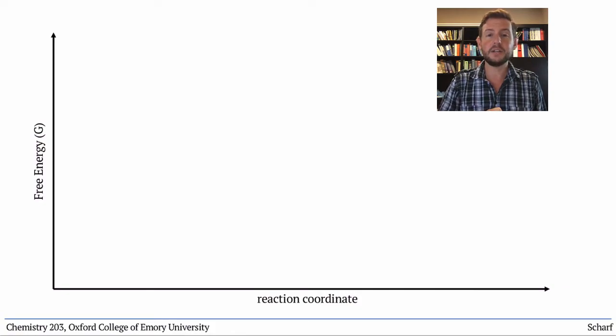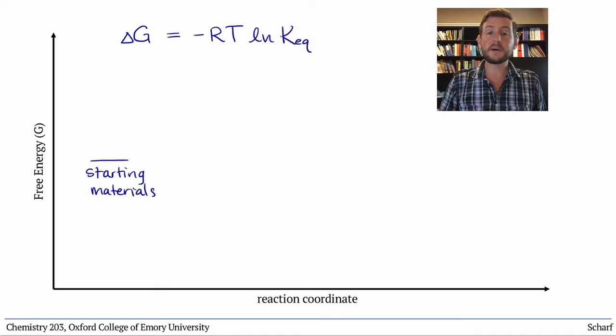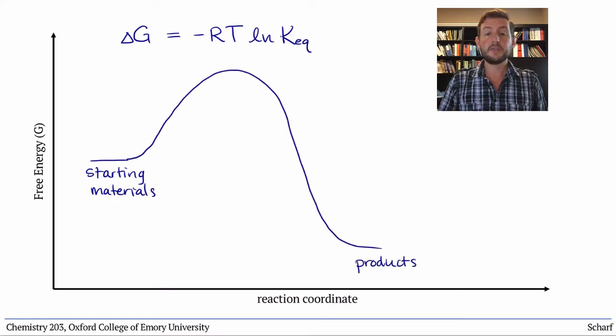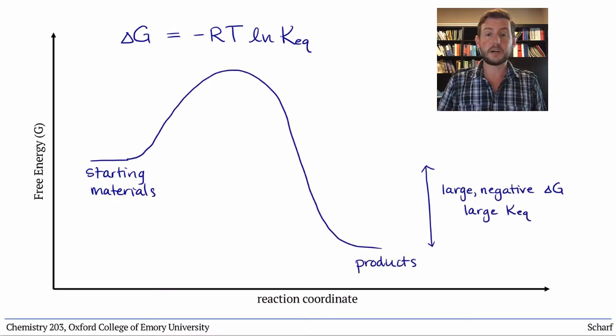This is described through the equation delta G equals negative RT natural log of KEQ. The more favorable or spontaneous a reaction, the greater its equilibrium constant.